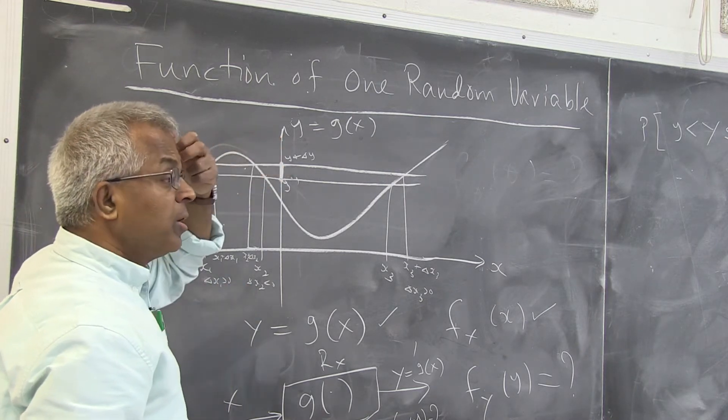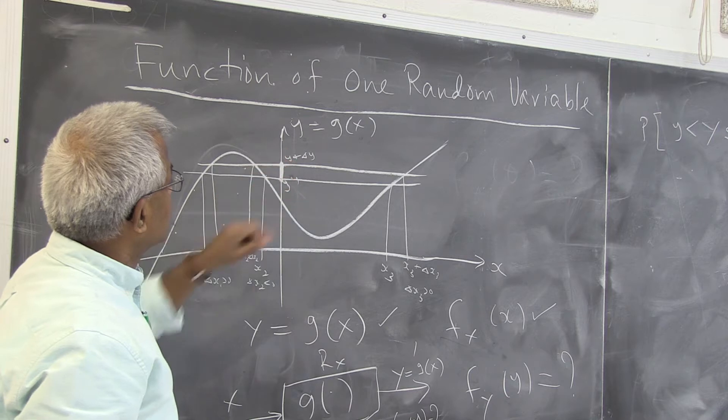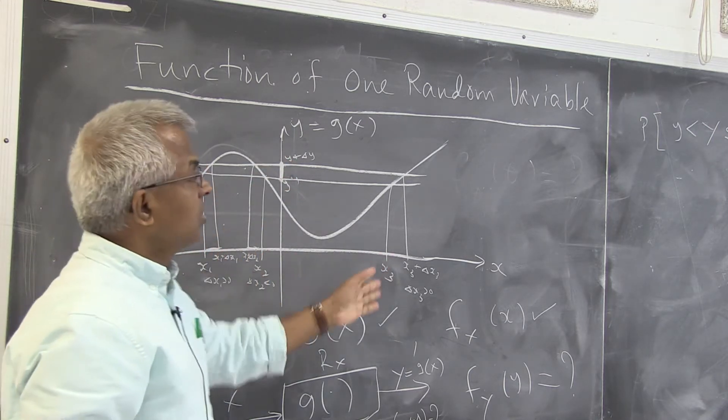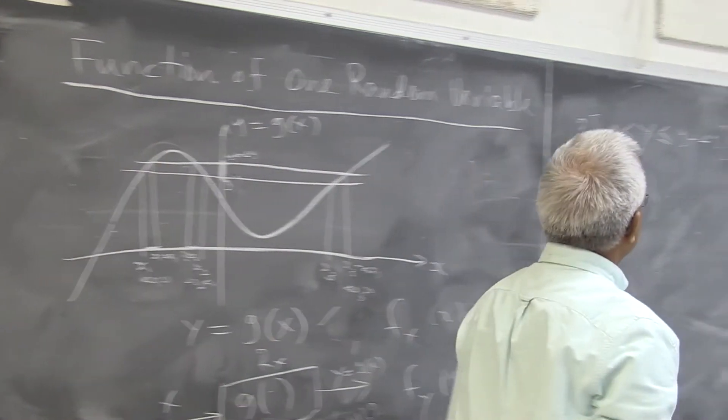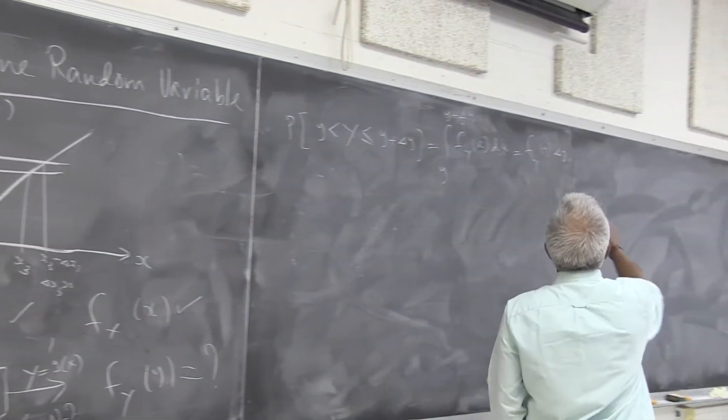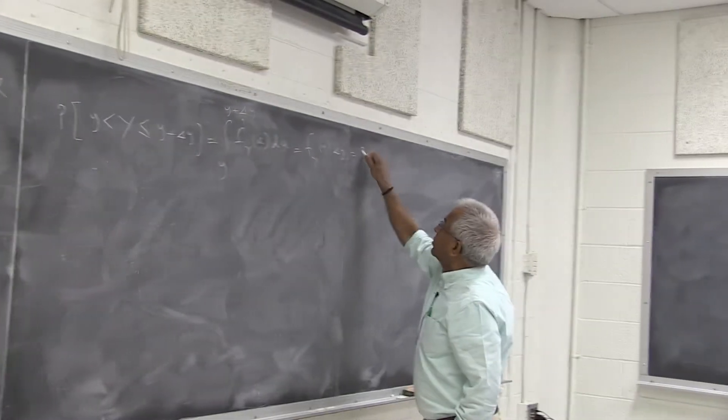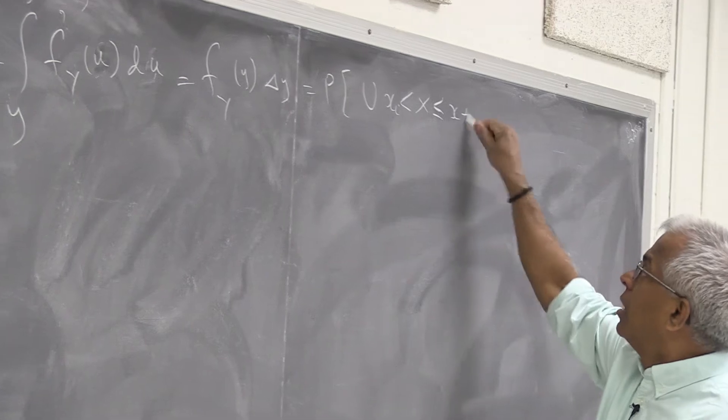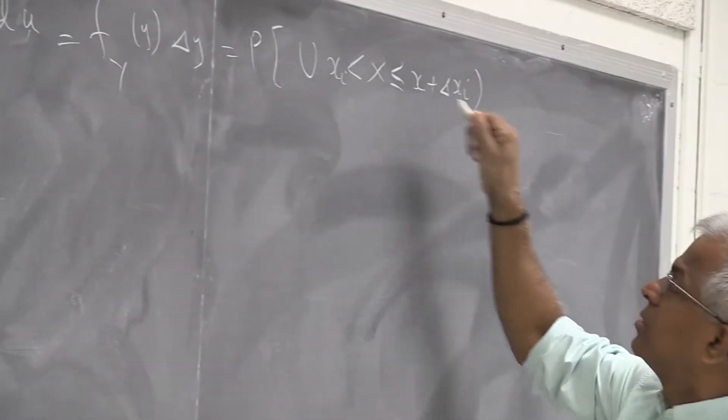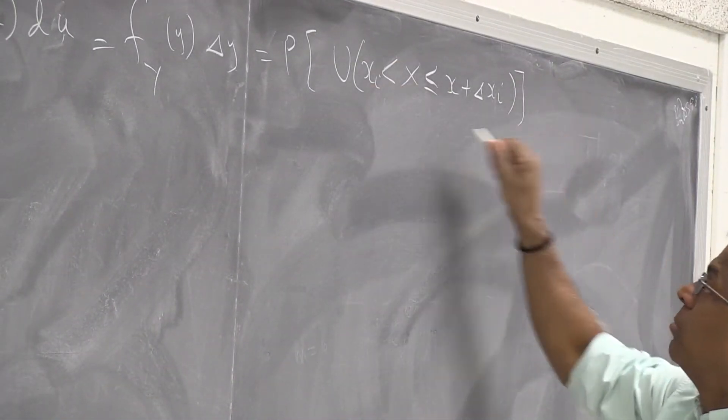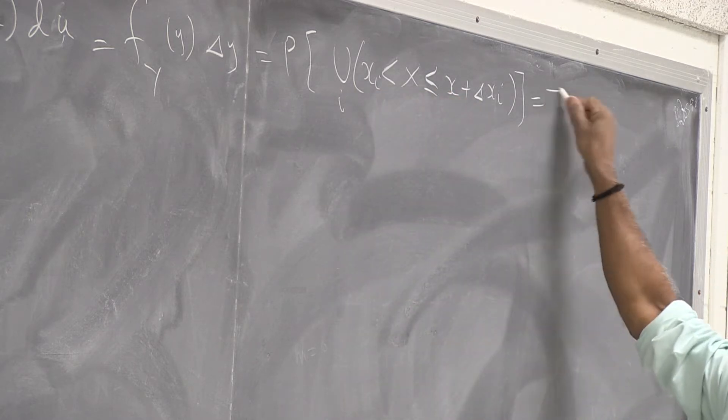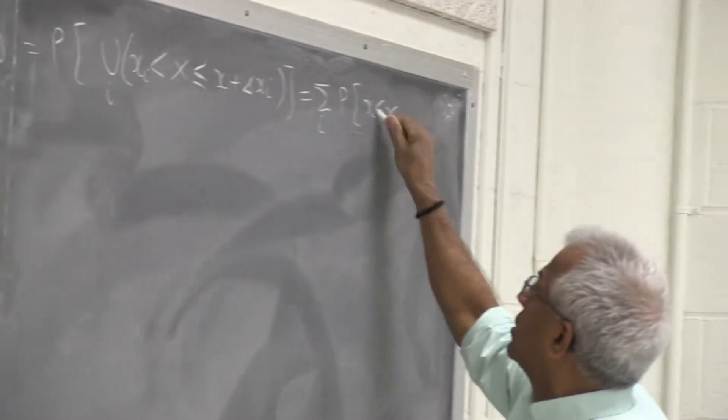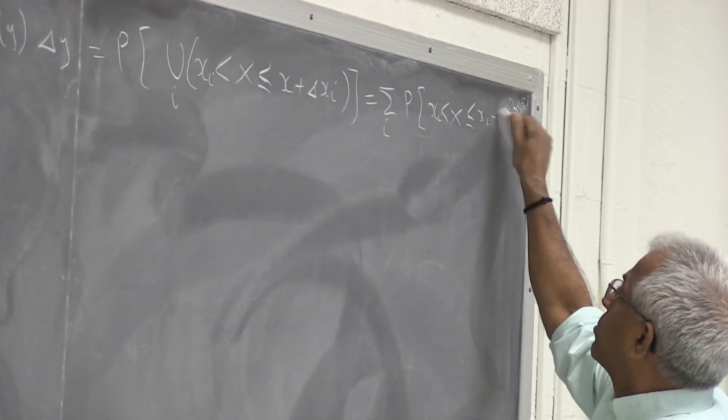So you could say that the probability, when y takes the values between y and y plus delta y, x is either here or here or here. And these regions are mutually exclusive. So this probability, we could also write down as the probability that x is between xi and between xi plus delta xi. But these regions are mutually exclusive. So it's the sum of the probabilities of x between xi and xi plus delta xi.